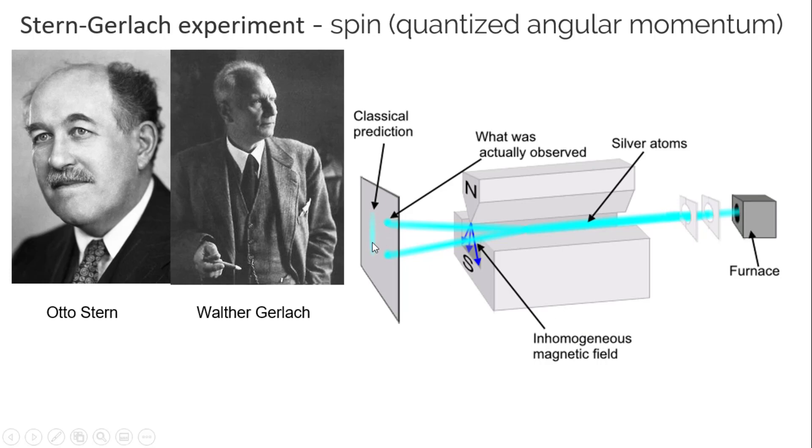And what they expected to happen with classical physics, if you send a magnet in any orientation, it should have just made this distribution here. Some would be high, some would be low, some would be more attracted to the north, some would be more attracted to the south, and they'd be all in between.